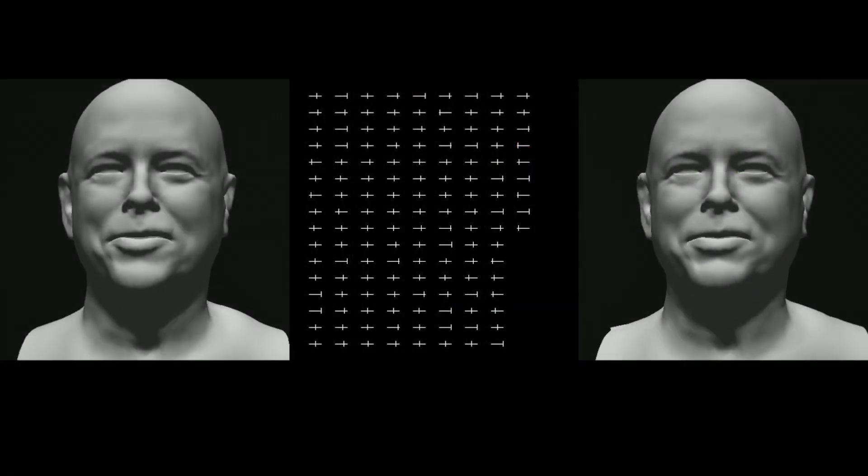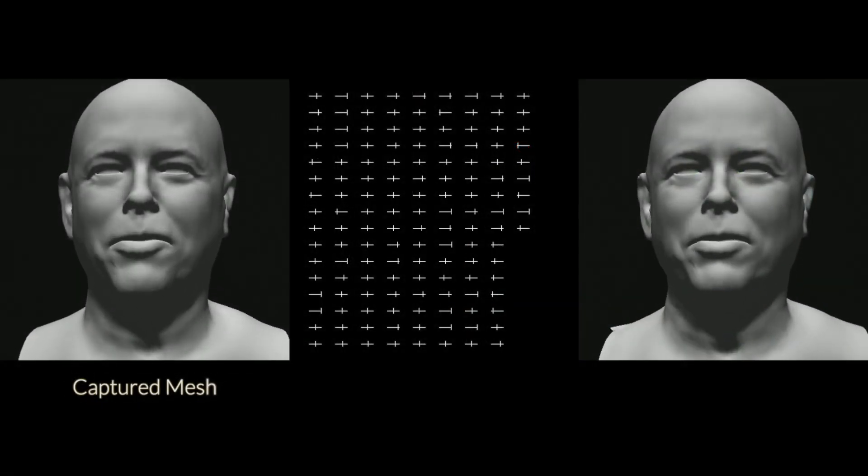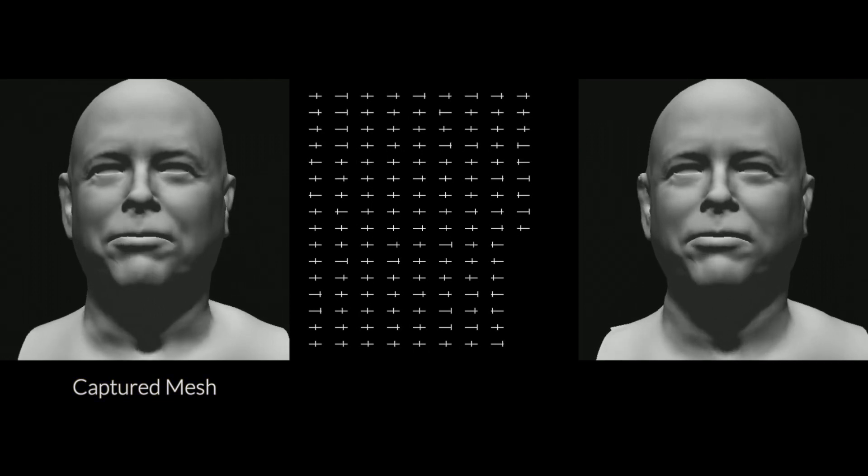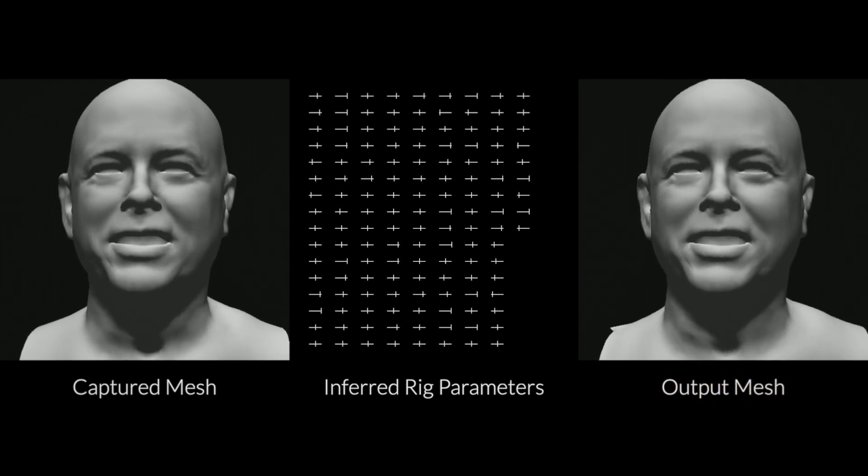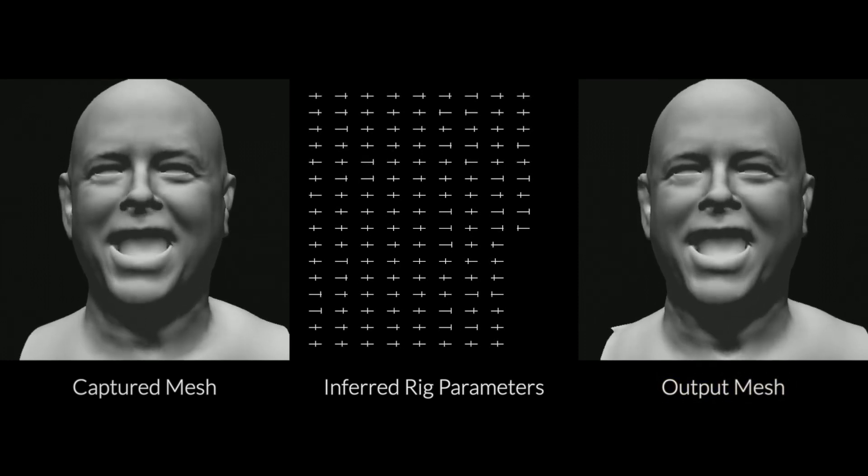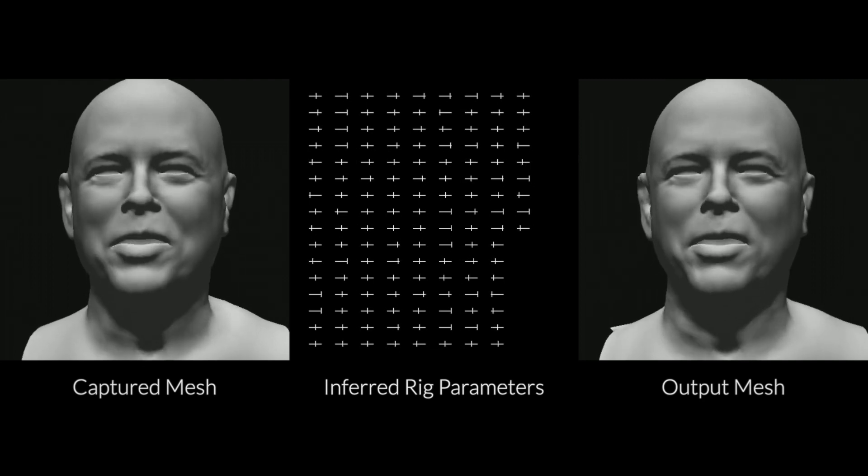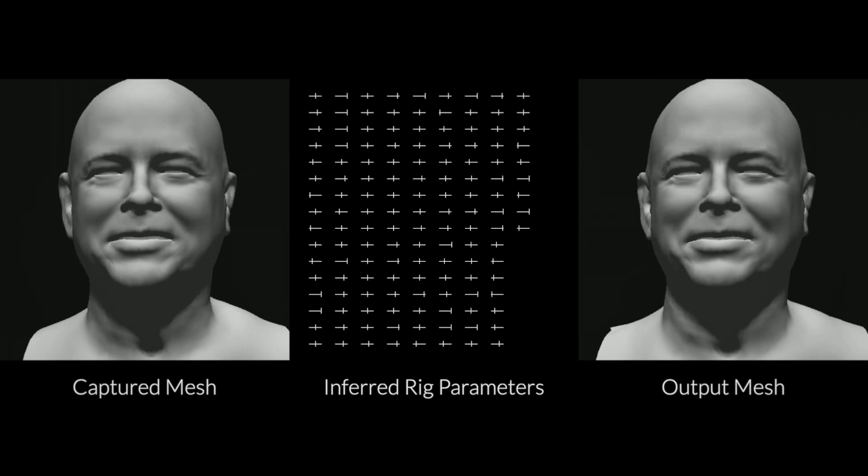To illustrate, here is an example. On the left is captured 4D facial mesh data. In the middle are rig control values found by our method, and on the right is the result of applying these values to the actual facial rig. This produces a near identical animation. Finding those values allows us to directly insert the capture data in the animator's existing pipeline.